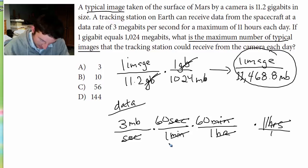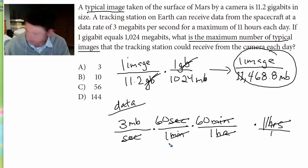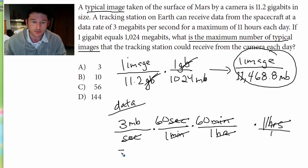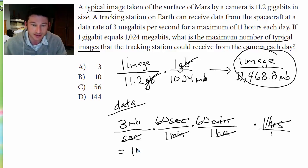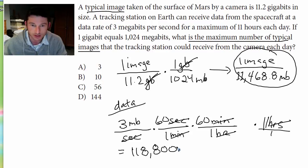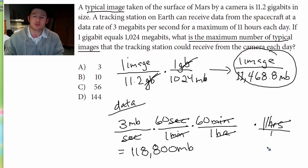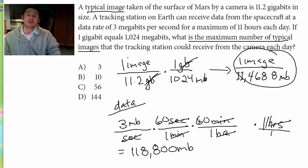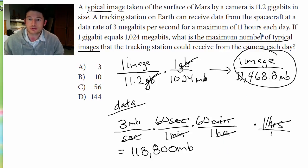Let's just do the multiplication: 3 times 60 times 60 times 11. We get 118,800 megabits. And this is the amount of megabits coming in over 11 hours on a typical day — your maximum each day.